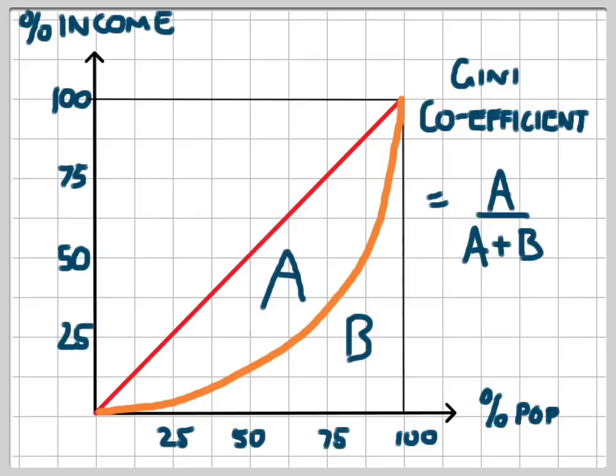So an economy with a perfectly equal distribution of income would have a Gini coefficient of 0. If the orange line was to move outwards and move towards a situation of perfect inequality, which would look like this, then A would be the same as A plus B. The area B would become 0, and the Gini coefficient would become A on A, and the answer to that would be 1. So an economy with a perfectly unequal distribution of income would have a Gini coefficient of 1.